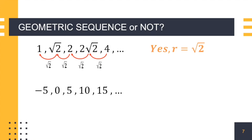Second example: negative 5, 0, 5, 10, and 15. Is this a geometric sequence? For the common ratio, 0 divided by negative 5 is 0. But 5 divided by 0 is undefined. So this is not a geometric sequence.